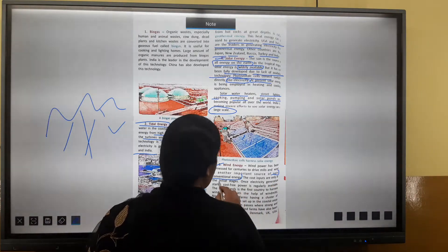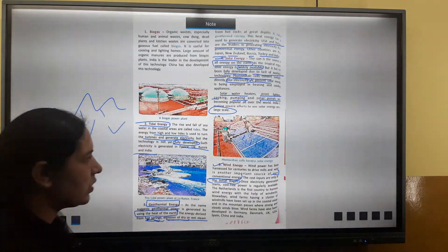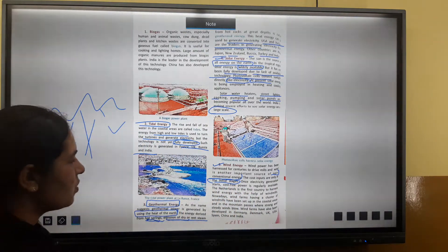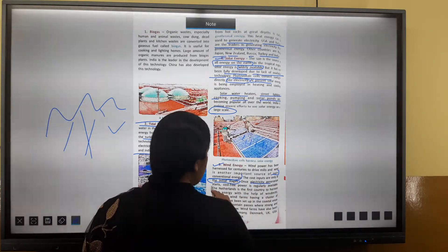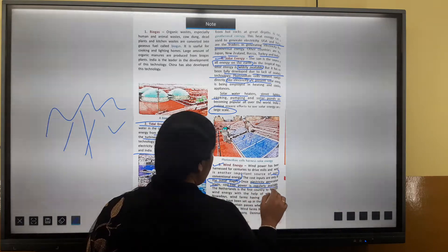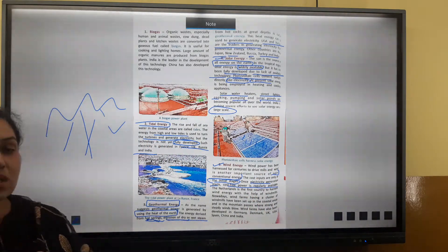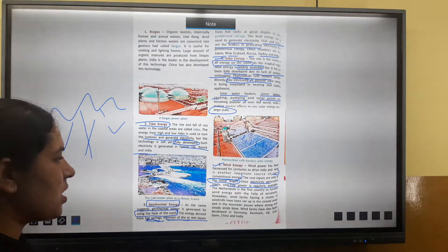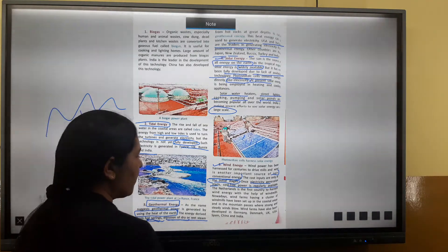The cost inputs are only at the initial stages. Once electricity generation starts, cost-free power is regularly available.